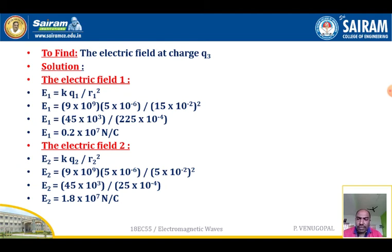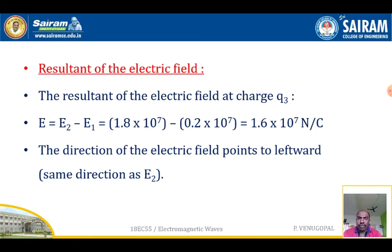Electric field at Q3 due to charge Q2: E2 equals k times Q2 divided by r2-squared, that is 9 times 10 to the power 9 times 5 times 10 to the power minus 6, divided by (5 times 10 to the power minus 2) squared, simplified to E2 equals 1.8 times 10 to the power 7 newtons per coulomb. The resultant electric field at Q3: E equals E2 minus E1, which is 1.8 times 10 to the power 7 minus 0.2 times 10 to the power 7, giving 1.6 times 10 to the power 7 newtons per coulomb. The direction of the electric field points to the left, in the same direction as E2.